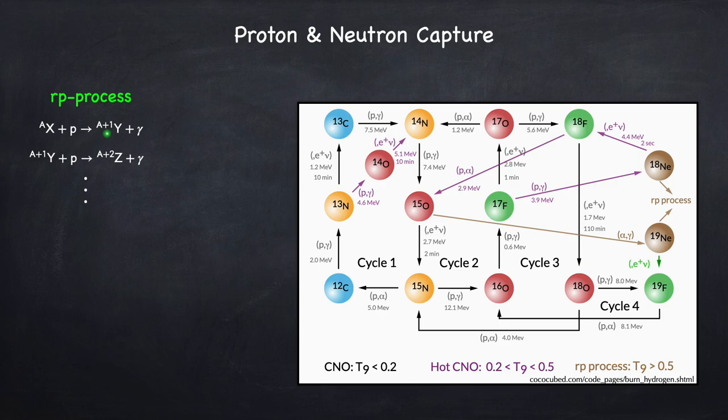If you keep piling on protons one after another, eventually you're going to get unstable nuclei. And if it's extremely unstable — meaning it will decay faster than it'll capture a proton — then you'll have some decay process mixed into this RP chain. But that's the basic idea: you start off with a seed nucleus and pile on protons one after another.